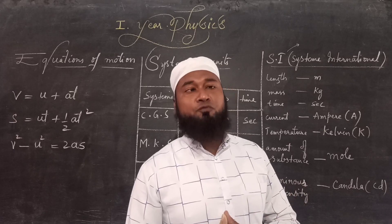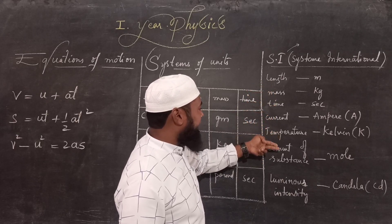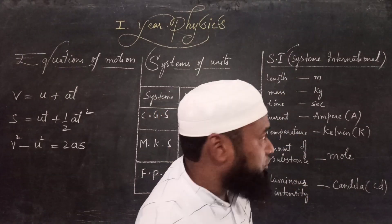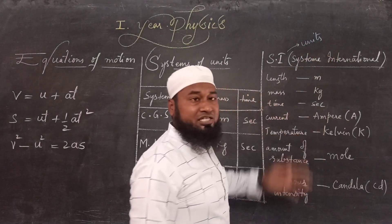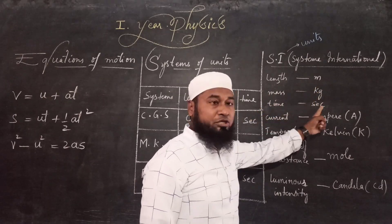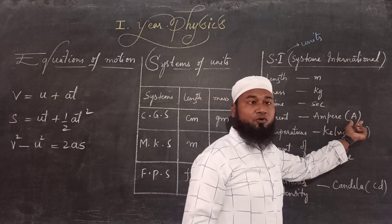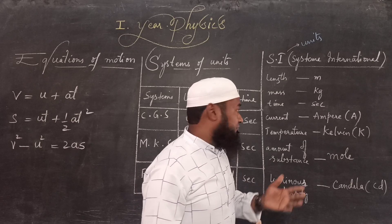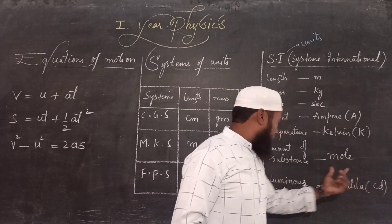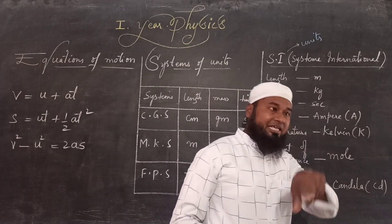Last but not the least, there is one international system of units followed overall in the world — the SI system — which contains mainly seven physical quantities: Length, Mass, Time, Current, Temperature, Amount of Substance, and Luminous Intensity. In SI: length is meter (m), mass is kilogram (kg), time is second (s), electric current is ampere (A), thermodynamic temperature is Kelvin (K), amount of substance is mole, and luminous intensity is candela (cd). Please take a screenshot.